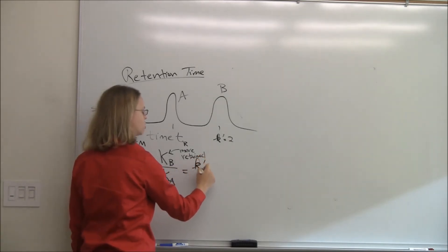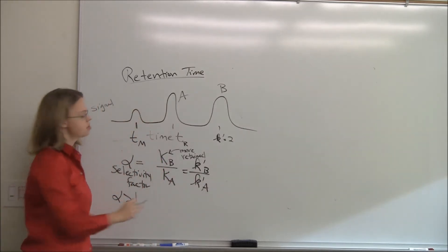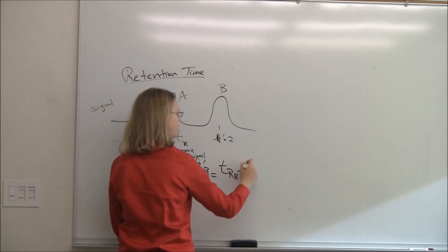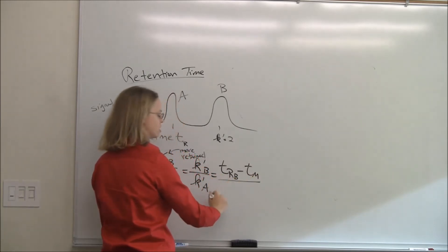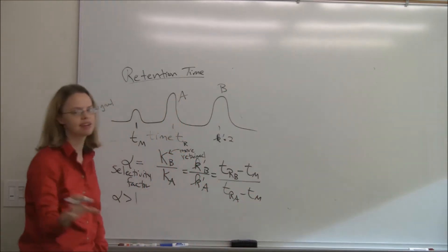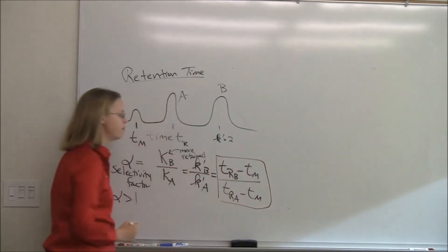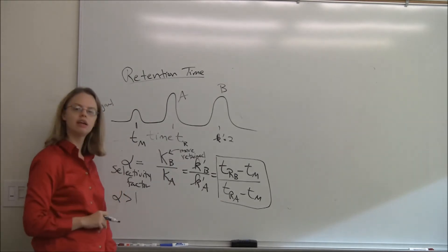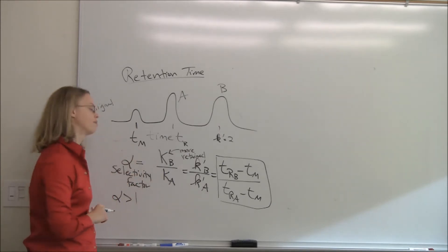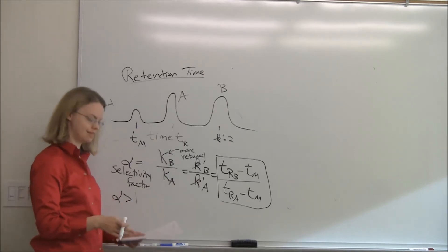Since K-prime and big K are proportional through those same volumes, we can say that alpha is also equal to K-prime of B over K-prime of A. So alpha equals the retention time of B minus T-sub-M divided by the retention time of A minus T-sub-M — the T-sub-M terms cancel out. The bigger the alpha number, the better separated the peaks are. Things with alpha of 1.1 you probably won't separate, but at 1.5 to 2 you probably will.